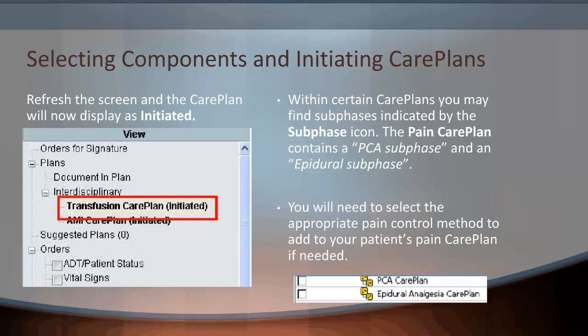Within certain care plans, you may find sub-phases indicated by the sub-phase icon, which are two yellow squares. The pain care plan contains a PCA sub-phase and an epidural sub-phase. You will need to select the appropriate pain control method to add to your patient's pain care plan if needed.